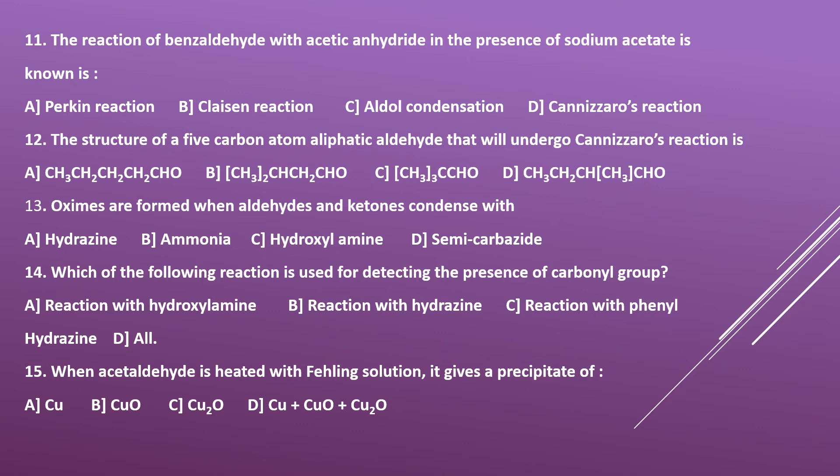Question number twelve: the structure of a 5-carbon atom aliphatic aldehyde that will undergo Cannizzaro reaction. Cannizzaro reaction does not require alpha hydrogen. You must choose the 5-carbon aliphatic aldehyde from the four options that has no alpha hydrogen.